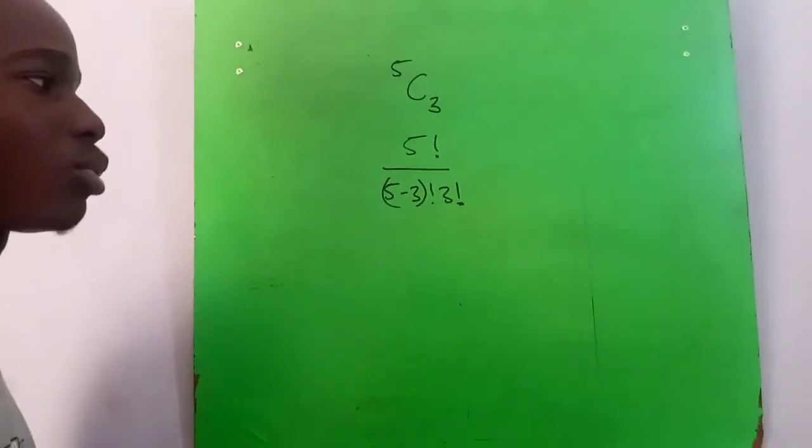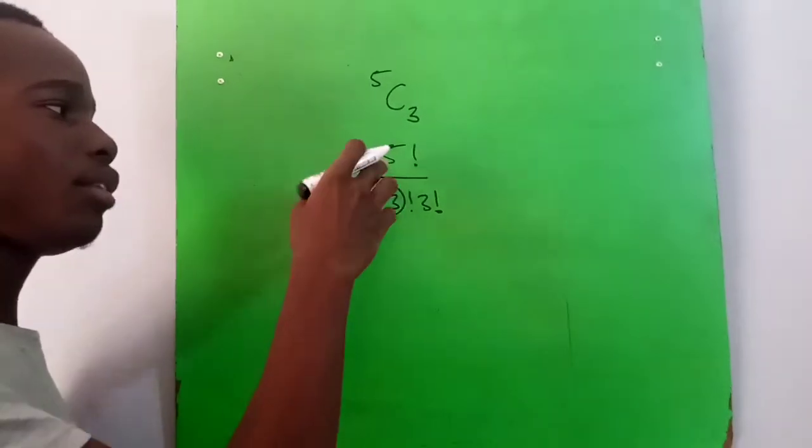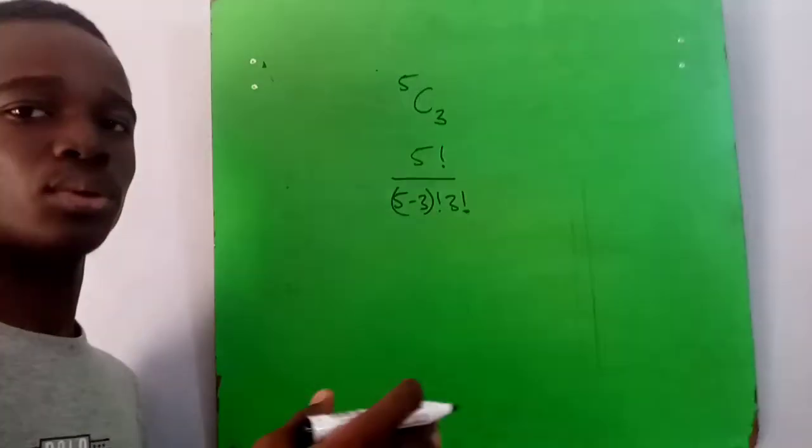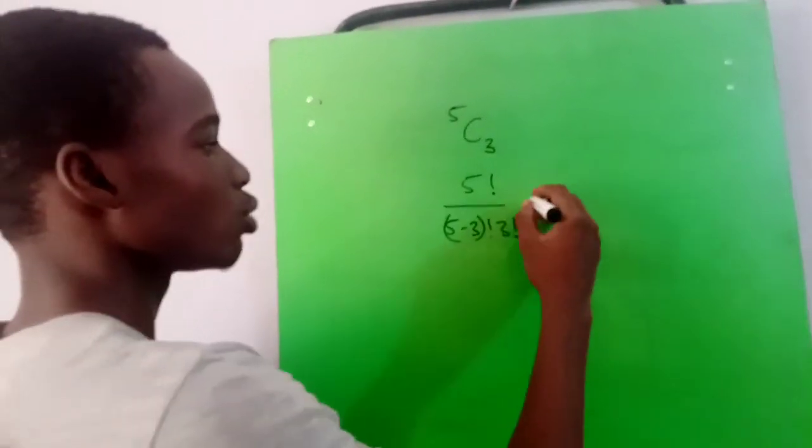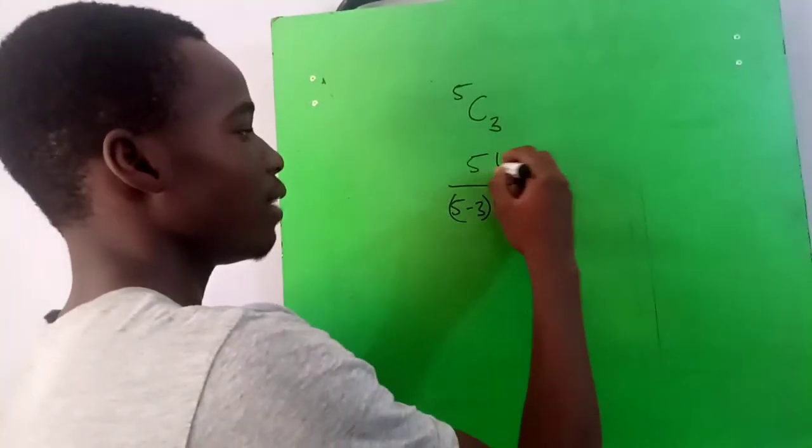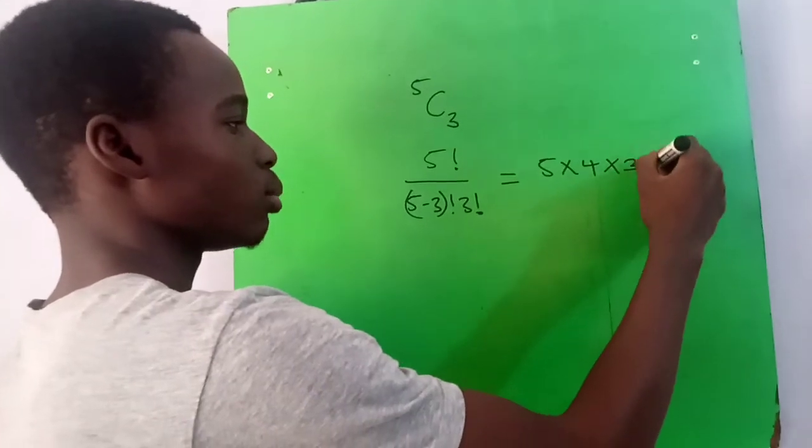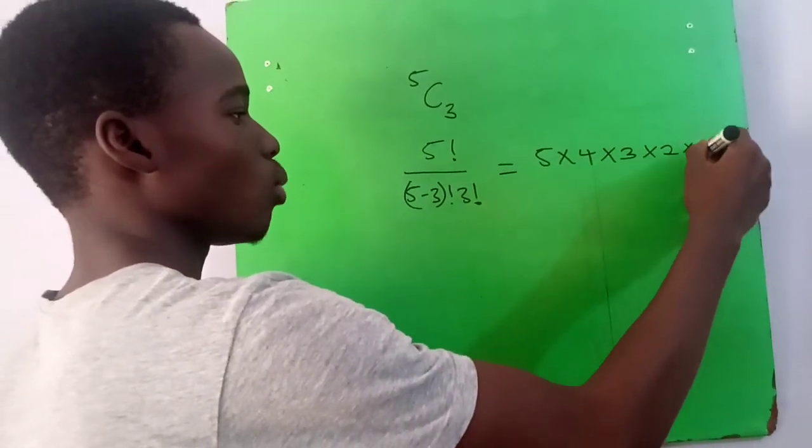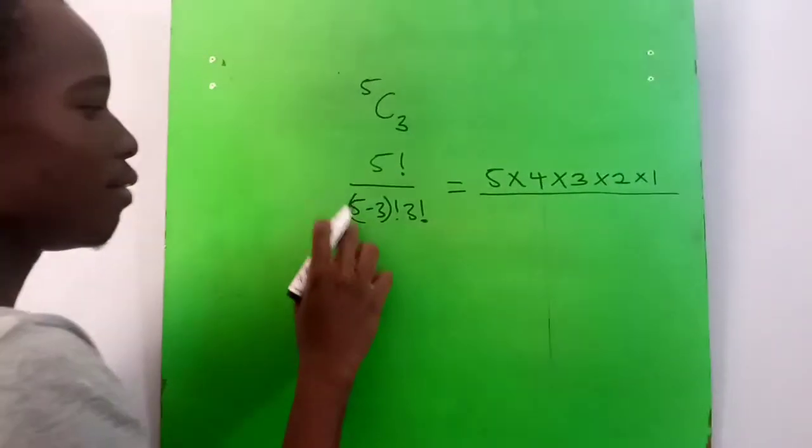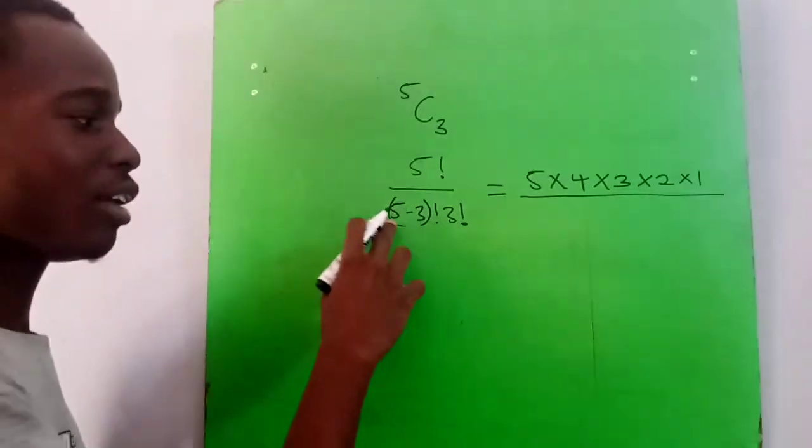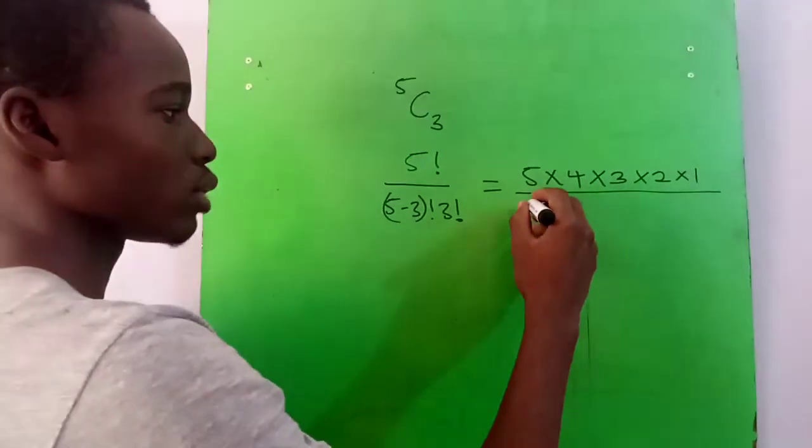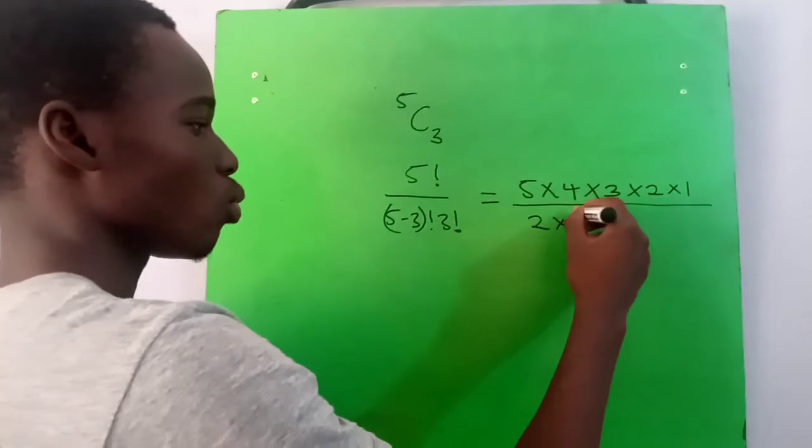What does factorial mean? It means if it's 5 factorial, it means 5 times 4 times 3 times 2 times 1. So now 5 combination 3, we have 5 factorial, that's 5 times 4 times 3 times 2 times 1 over (5 minus 3) factorial. That's 5 minus 3 is 2, so 2 factorial will be 2 times 1 times 3 factorial.